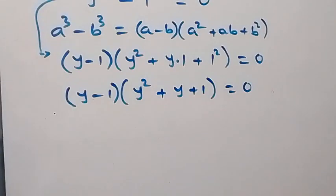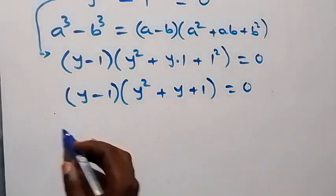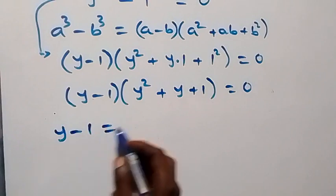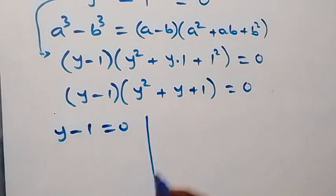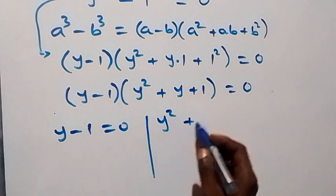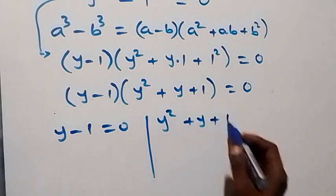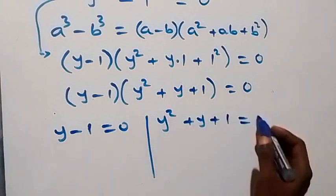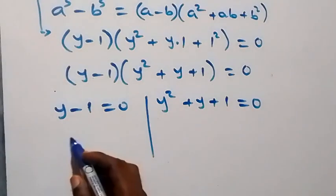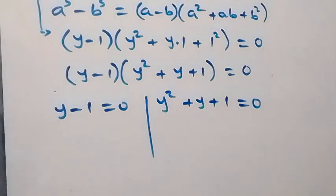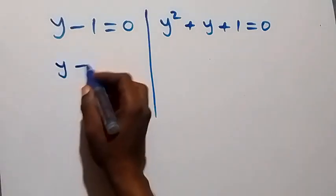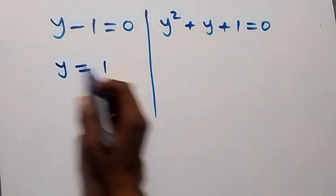Then this gives us two cases. The first one: we have y minus 1 equals to 0. And also, we have y squared plus y plus 1 equals to 0. And from the first case, we have y equals to 1.